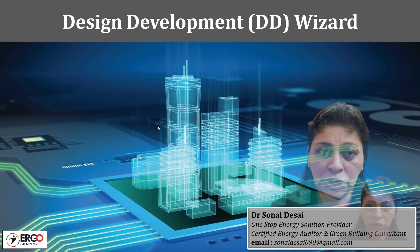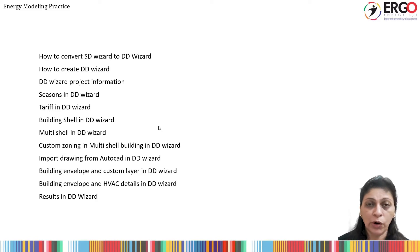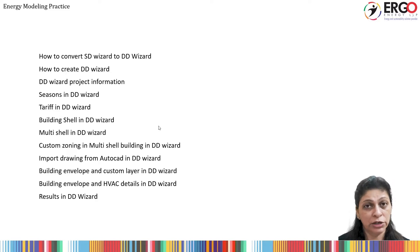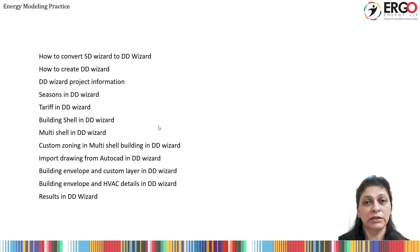This particular introduction session has the following points to be discussed. It starts with how to convert an existing SD wizard to DD wizard, or how to create a new project file in DD wizard. Then it talks about different seasons in DD wizard, how to add tariff structure, how to add building shell, and multiple building shells. Then custom zoning, which is applicable for larger buildings, how to create custom zoning based on a CAD file, as well as how to create a building shell by importing a CAD file — explained with some example case studies.